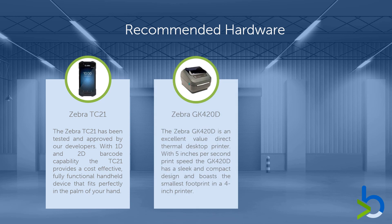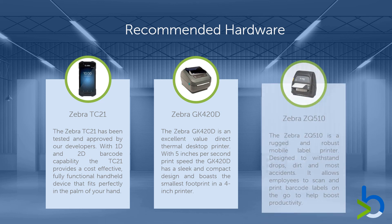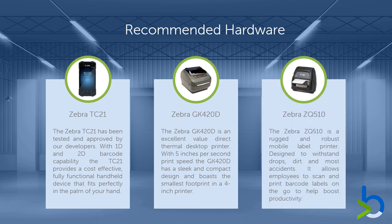The Zebra GK420D is an excellent value direct thermal desktop printer. With 5 inches per second print speed, the GK420D has a sleek and compact design and boasts the smallest footprint in a 4 inch printer. The Zebra ZQ510 is a rugged and robust mobile label printer designed to withstand drops, dirt and most accidents. It allows employees to scan and print barcode labels on the go to help boost productivity.